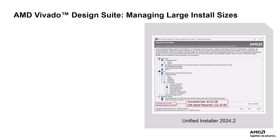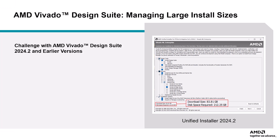The AMD Vivado design suite is your all-in-one toolset for FPGA and SOC design and development, supporting a complete workflow from design entry and synthesis to implementation and verification. In Vivado 2024.2 and earlier versions, one common challenge was the large, bulky installation size, often exceeding 200 gigabytes. This bulk includes device files for the entire range of supported hardware, even those that may not be relevant to your specific project.